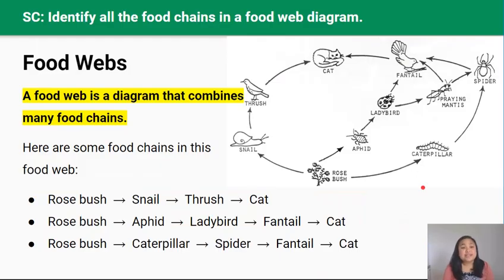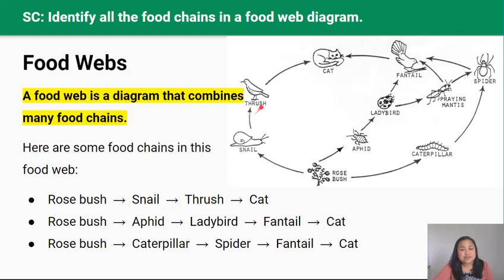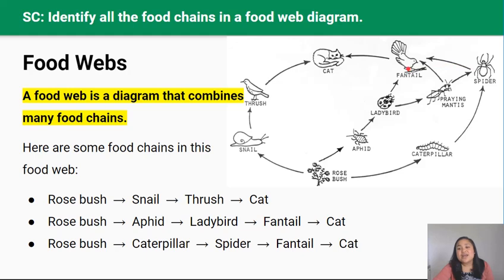When all the food chains in an ecosystem are joined together, they form a food web. A food web is a diagram that combines many food chains. Here are some chains in this food web: rosebush is eaten by the snail, the snail is eaten by the thrush, and the thrush is eaten by a cat. In another chain, rosebush is eaten by the aphid, aphid is eaten by the ladybird, the ladybird is eaten by the fantail, and the fantail is eaten by the cat. In a third chain, the rosebush is eaten by a caterpillar, the caterpillar is eaten by a spider, the spider is eaten by a fantail, and the fantail is eaten by the cat.